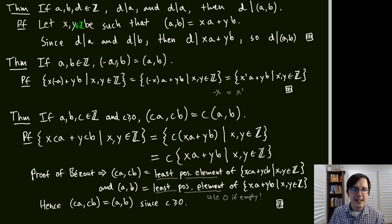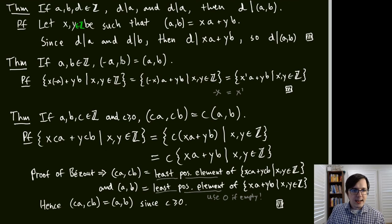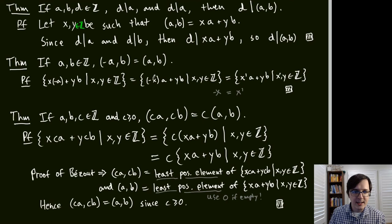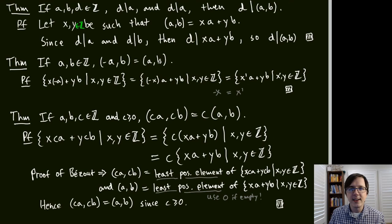Another property: gcd(−A, B) = gcd(A, B). Using the linear combination viewpoint, the set {X(−A) + YB} equals {X'A + YB} via the substitution X' = −X, so by our characterization theorem the GCDs are equal.